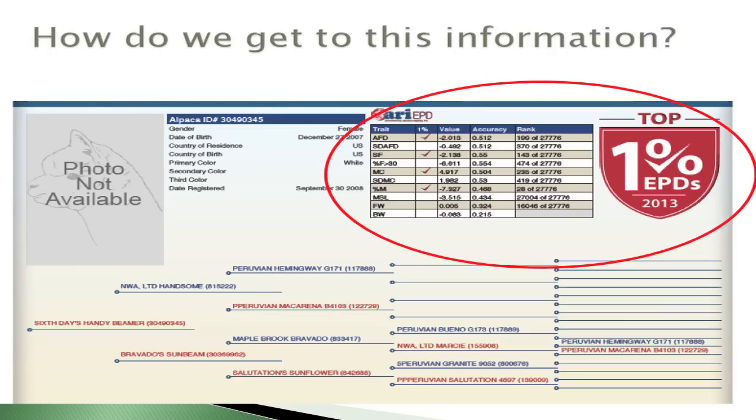A lot has happened over the last few years relative to EPD and genetic improvement. We've gone from AOA, and originally ARRI, to a situation where we can identify the top 1% of genetics for a variety of traits. How did we get from just pictures and visually appraising animals to another tool in our toolbox to make genetic improvement? How did we get to the ability to rank animals on their genetic merit for a variety of traits?